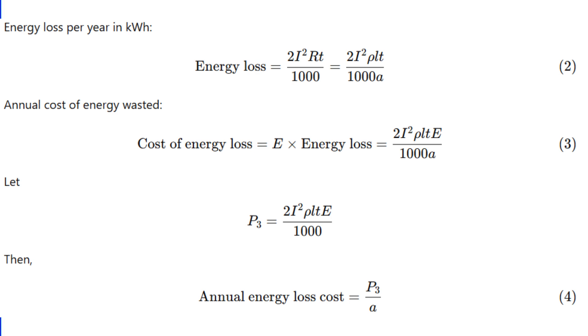Here, P3 is a constant that bundles together the current, length of the conductor, resistivity of the material, hours of operation, and cost of energy per unit. So it includes both technical and financial aspects tied to power loss.